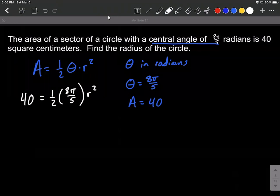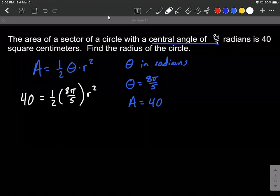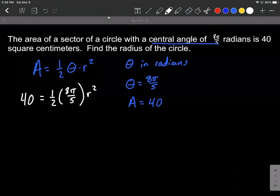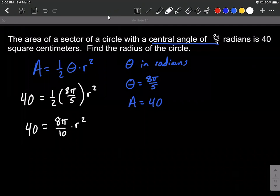So our goal is to solve for r squared. Let's go about this by first combining together those fractions on the right-hand side. We know how to multiply fractions by multiplying numerators and multiplying denominators, so multiply 1 times 8π is 8π, 2 times 5 is 10, and I'll kind of leave the r squared over there on the right-hand side.